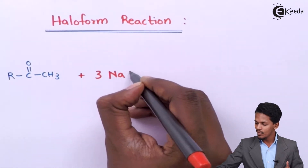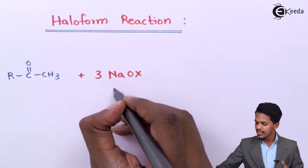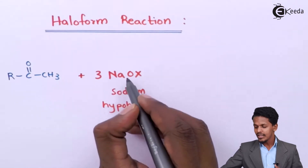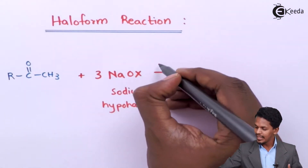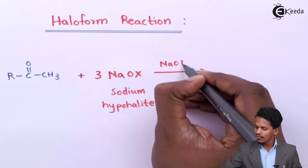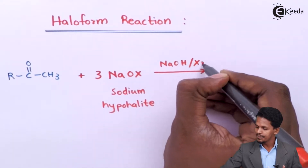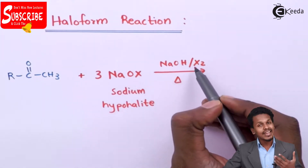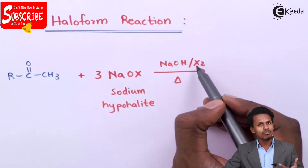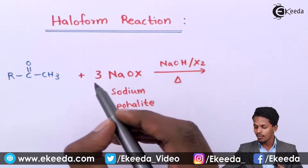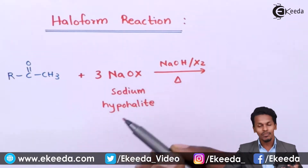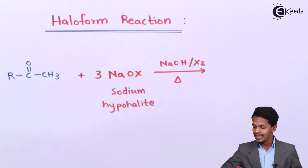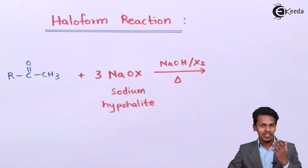Now let me introduce the other reagents. The reagents are basically three moles of NaOX, which is known as sodium hypohalite. This sodium hypohalite is produced when we take NaOH along with X2 — where X2 can be Cl2, Br2, or I2 — and heat it. Whenever NaOH reacts with the halogen it will form NaOX, sodium hypohalite. We will use three moles of NaOX.